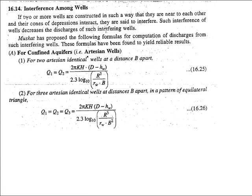In the case of interference, we mainly study the effect on discharge. If two or more wells are constructed near each other, we find that their cones of depression interact. Such interference of the wells decreases the discharge of the interfering wells. If their radii of influence are interacting with each other, their cone of depression will go down and their individual discharge will also go down.